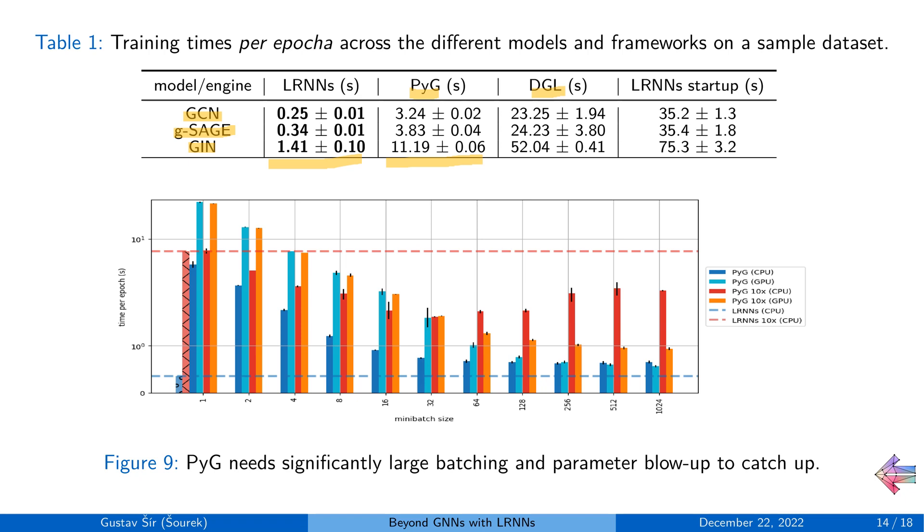And this holds as long as we do not increase the tensor parameterization and batching to the extremes, where the standard weight matrix multiplication takes over basically all of the computation, and that's because we currently simply do not utilize any acceleration for large matrix operations.